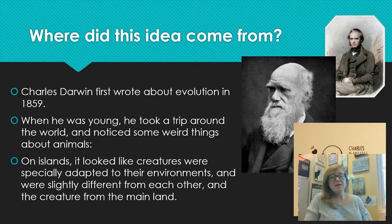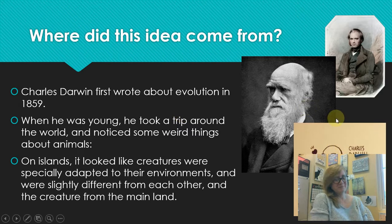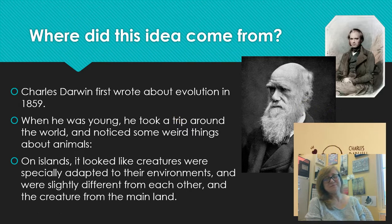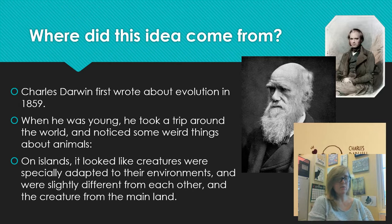You can't talk about natural selection unless you're talking about the man, Charles Darwin. So Charles Darwin really wrote about evolution in 1859. His famous book is On the Origin of Species, and it's like the book about evolution.